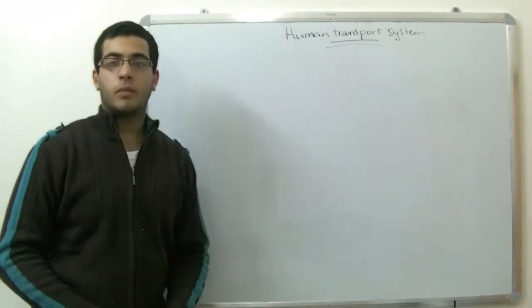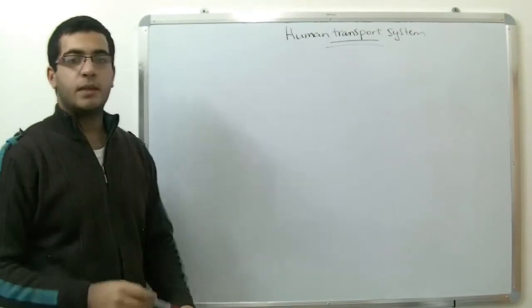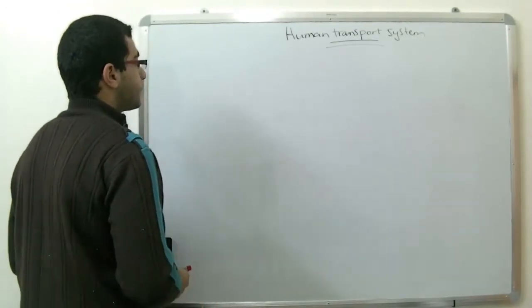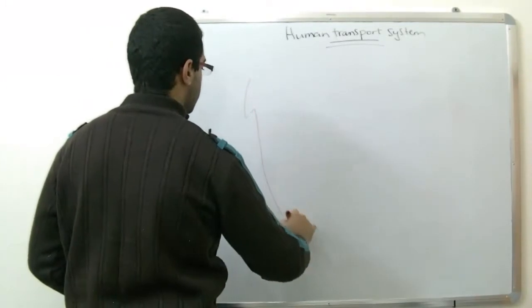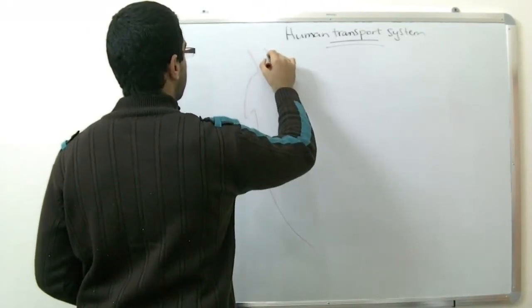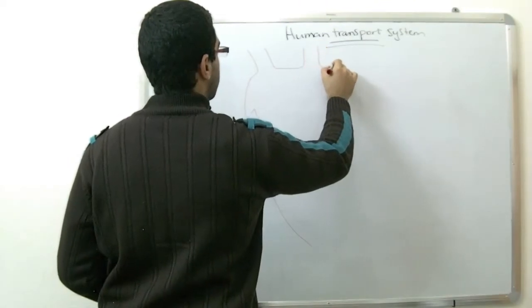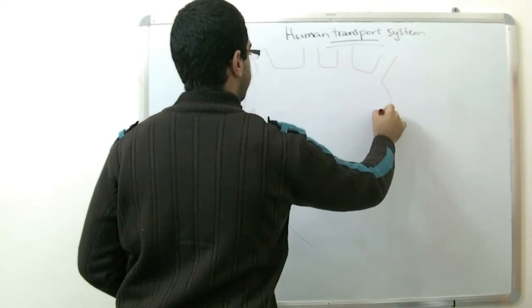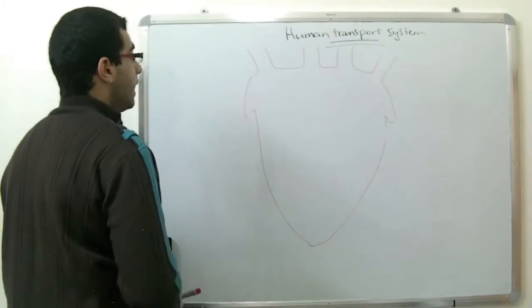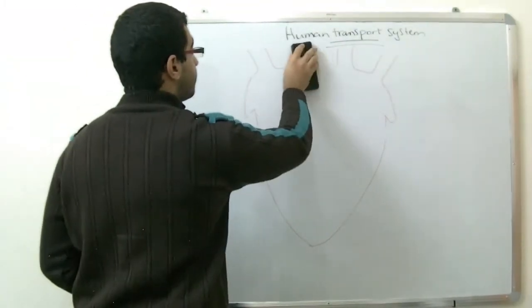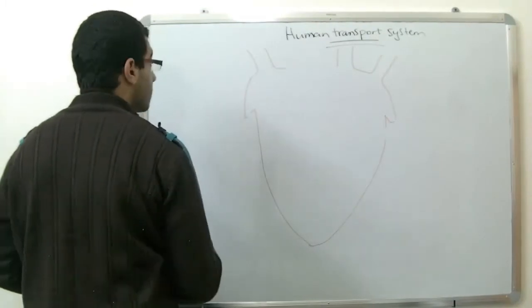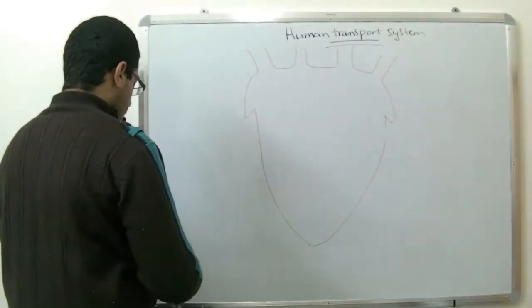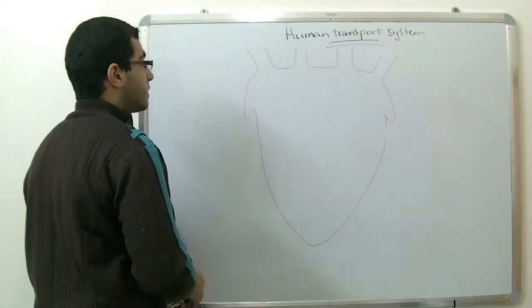The heart is a hollow muscular organ which is found nearly in the middle of the chest cavity. And we will draw the structure of the heart.